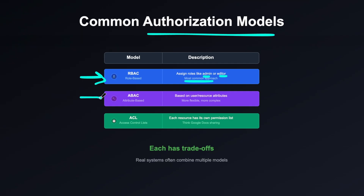We also have attribute-based access control, which is based on user or resource attributes. This is more flexible and more complex compared to role-based access control. Another common approach is access control lists, or ACL, where each resource has its own permissions list. You assign permission lists to a resource, which determines what resources a user can access — for example, this is commonly used in Google Docs.